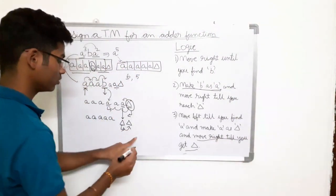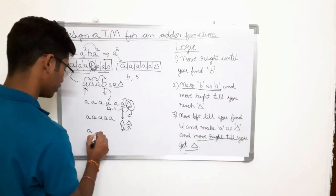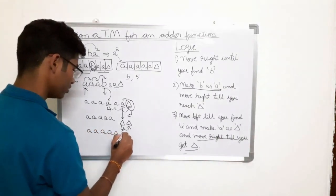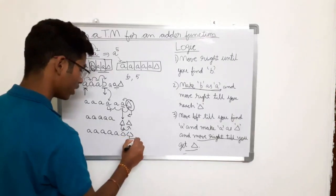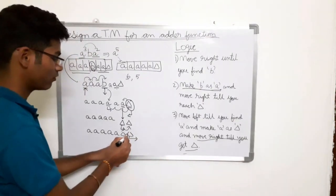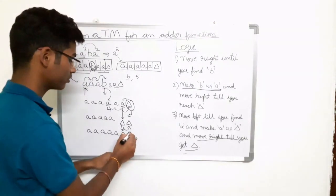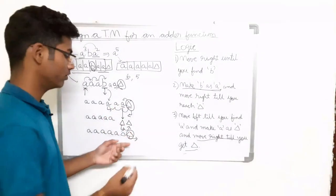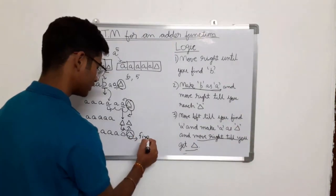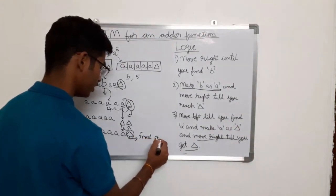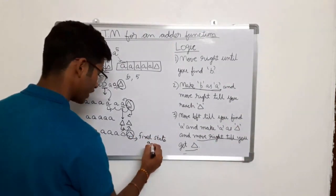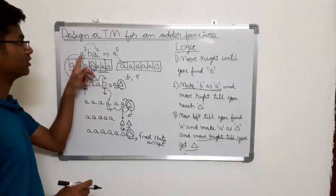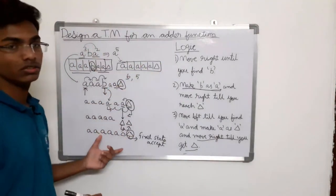Move right till you get delta — move right — we have five a's here and you have moved right. Since we have reached delta, we have reached the final state, which means we can accept the string. This is the implementation of this logic for the adder function.